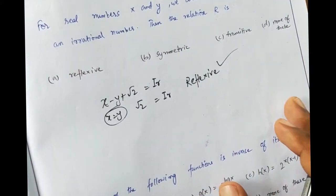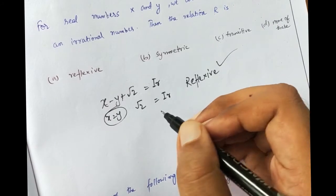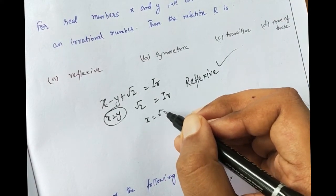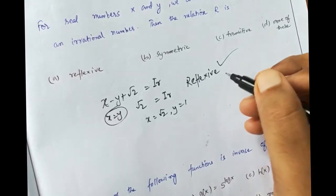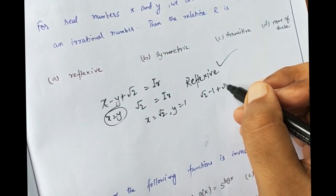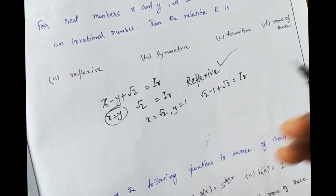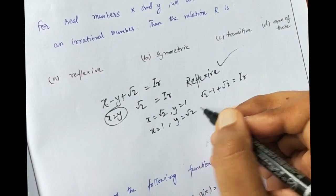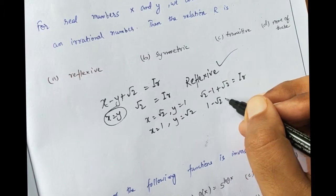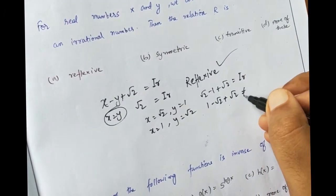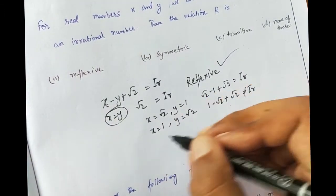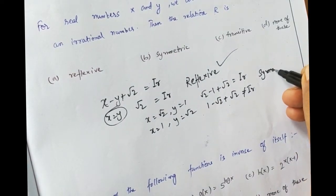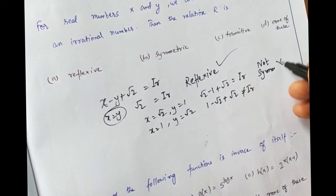Now, whether it is symmetric or not, we will take an example. If we take x equal to root 2 and y equal to 1, then root 2 minus 1 plus root 2 is an irrational number. But if I invert this — x equal to 1 and y equal to root 2 — then we have 1 minus root 2 plus root 2, which is no longer an irrational number. Therefore, this is not a symmetric relation.